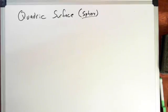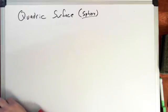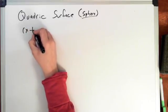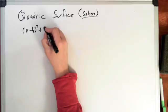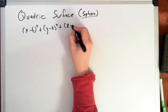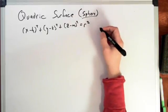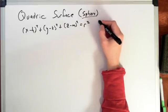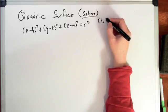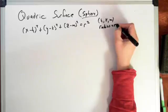From page 22 in the handbook, the standard form of the quadric surface of a sphere is: x minus h squared plus y minus k squared plus z minus m squared is equal to r squared. The center in 3D coordinates is at h, k, and m, with a radius of r.